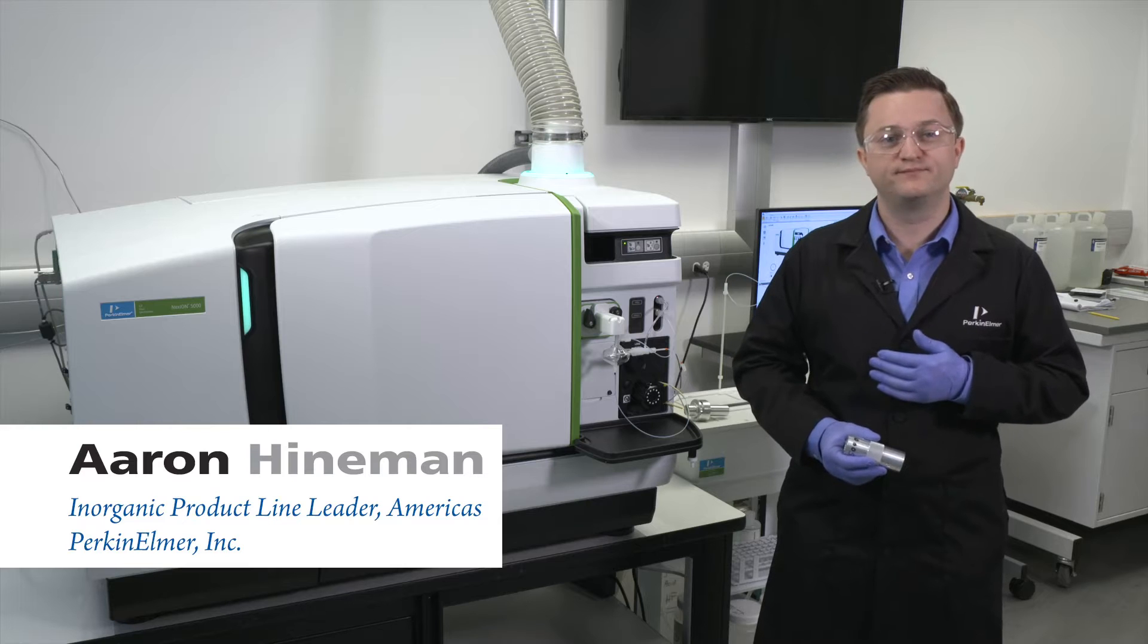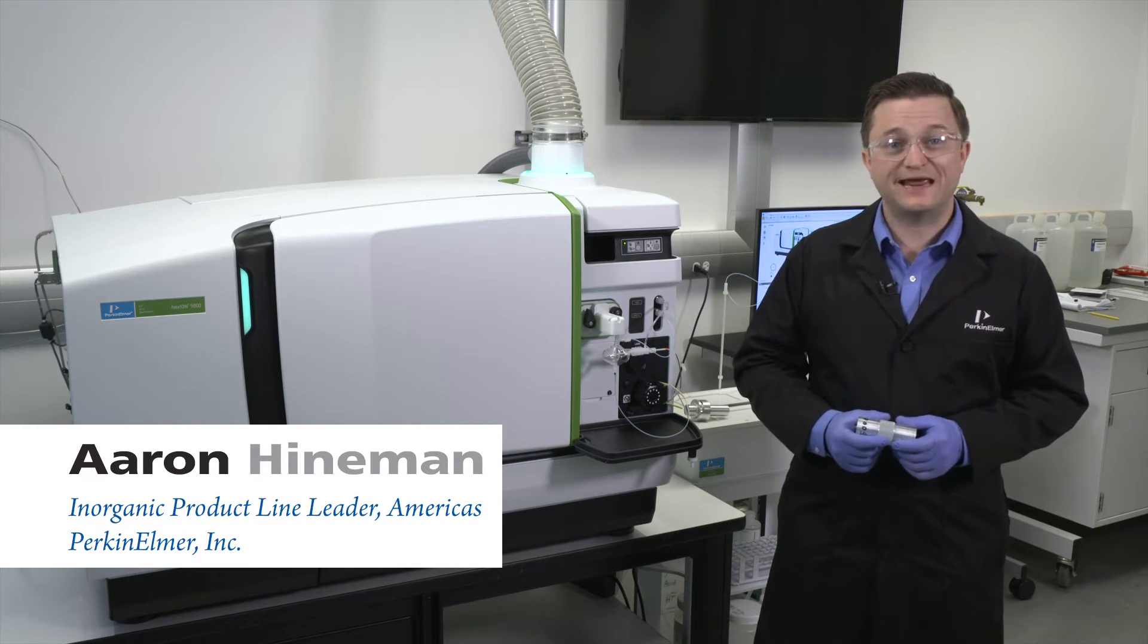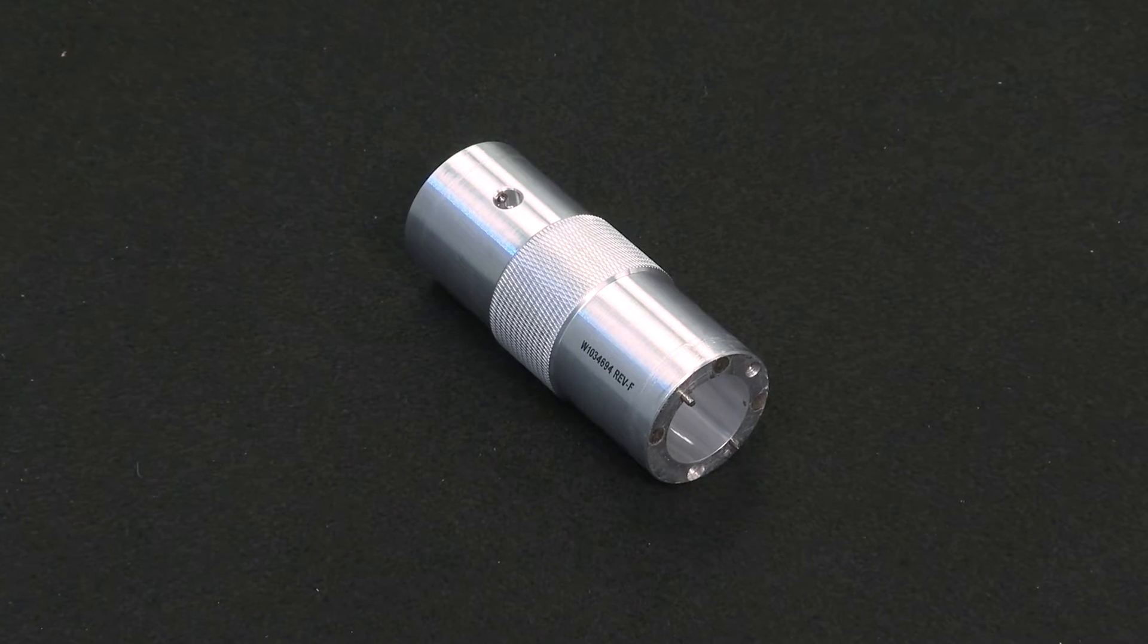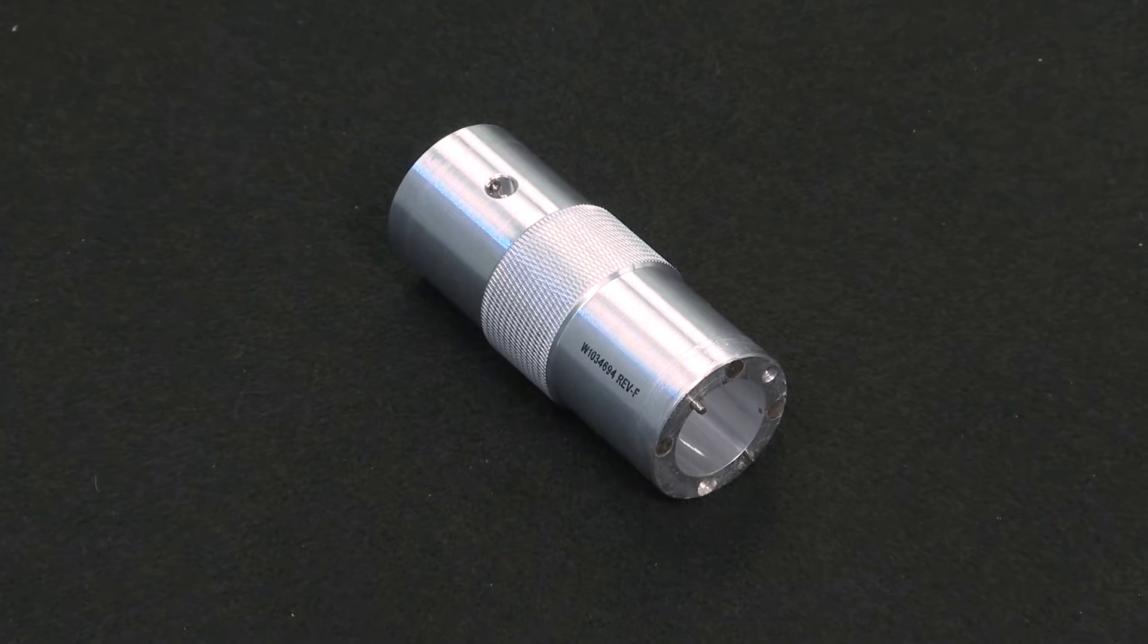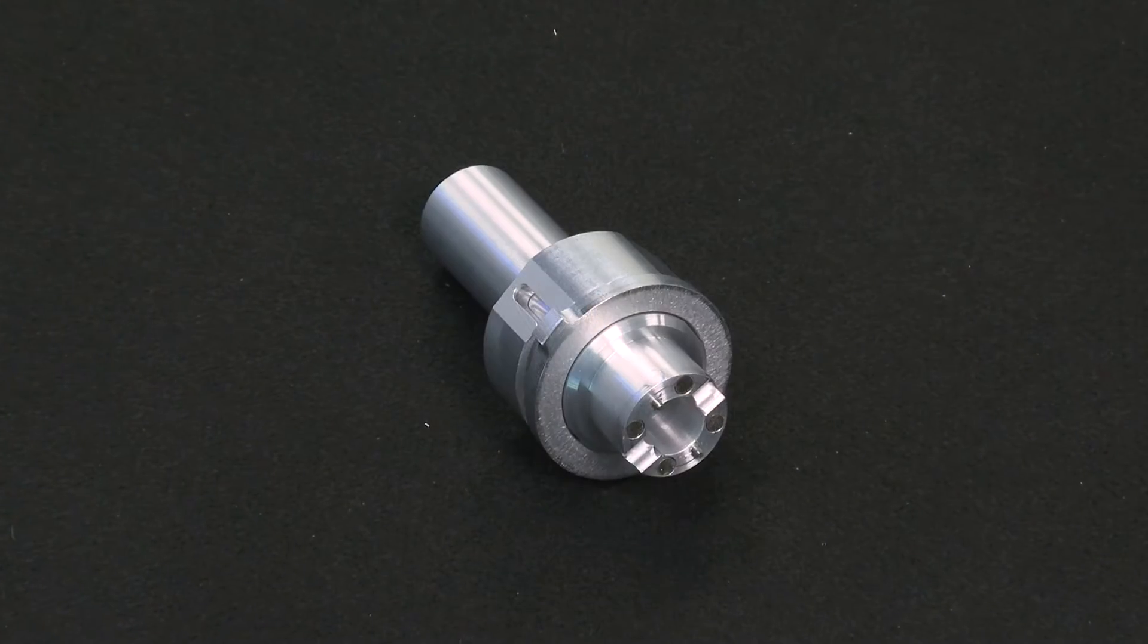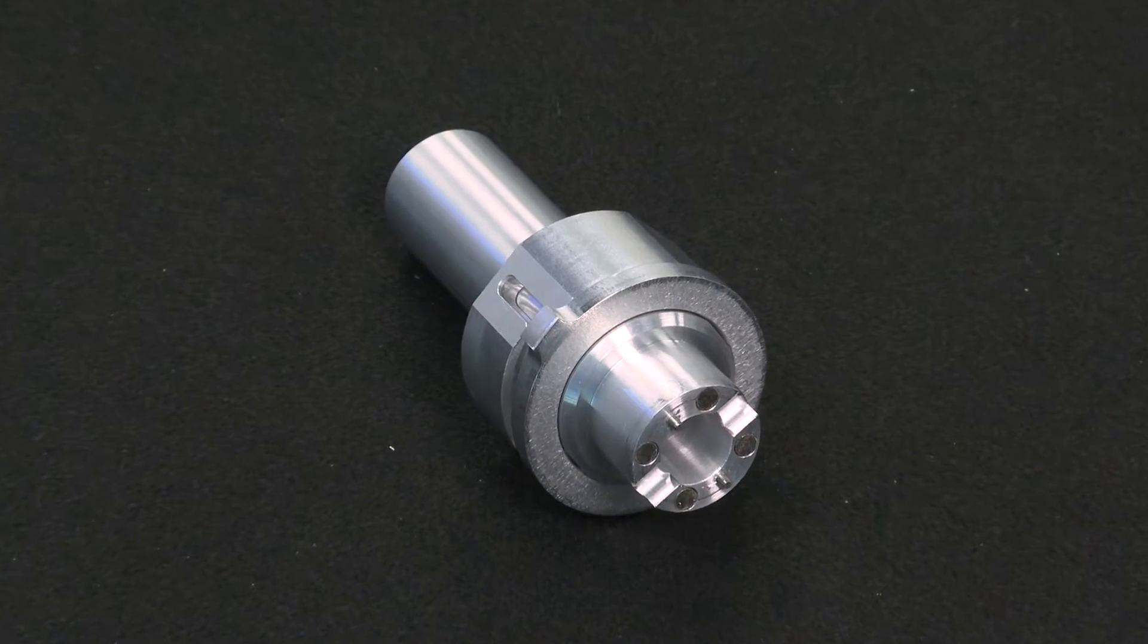I'm Aaron Heineman and in this video I will demonstrate cone access and removal from a Nexion 5000 instrument. The cone removal tool that was included with the instrument will be used for the sampler and skimmer cones, and then the hyper skimmer removal tool will be used for the hyper skimmer omni ring assembly.